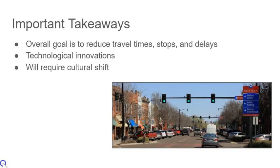The important takeaways to know about coordinated traffic signal design are that the ultimate goal is to reduce travel time, stop time, and delays. To obtain the most efficient travel times, it will require the use of current technologies such as sensors and camera actuation combined with V2X communication. Commuters should have an open mind when it comes to changes that will take place, as coordinated traffic signals ultimately affect every driver on the road.